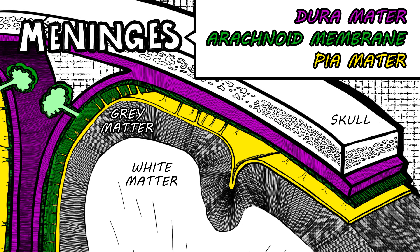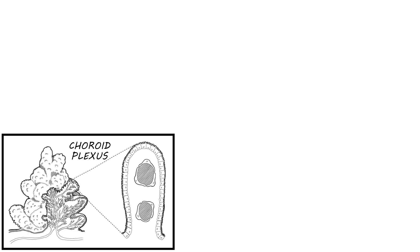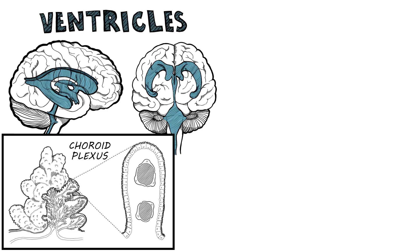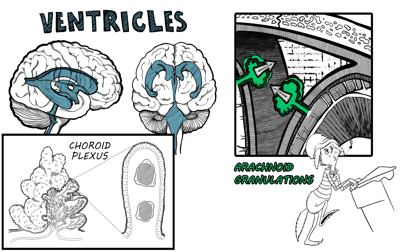The pia hugs the brain, while the dura is on the fringes. The cerebrospinal fluid, called the CSF for brief, provides the CNS with nutrients and cushioning relief. It's produced by choroid plexus in ventricles of the brain, and absorbed in arachnoid granulations so that waste can drain.